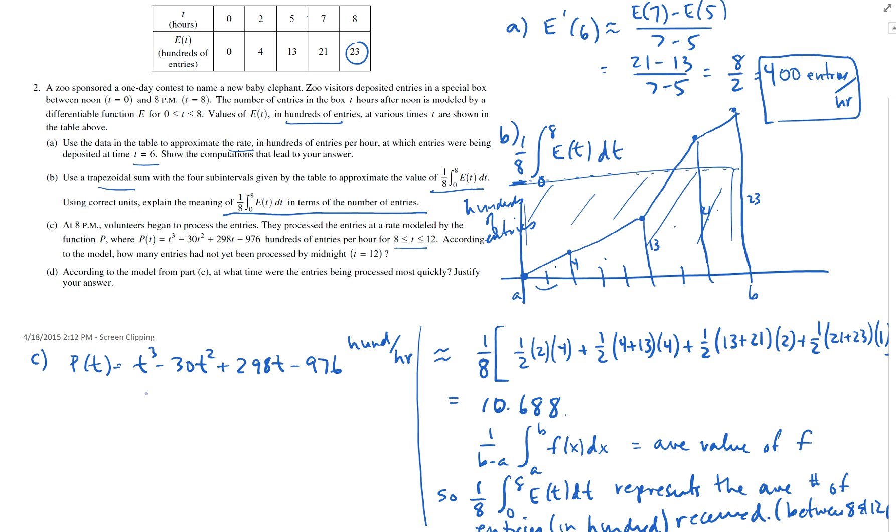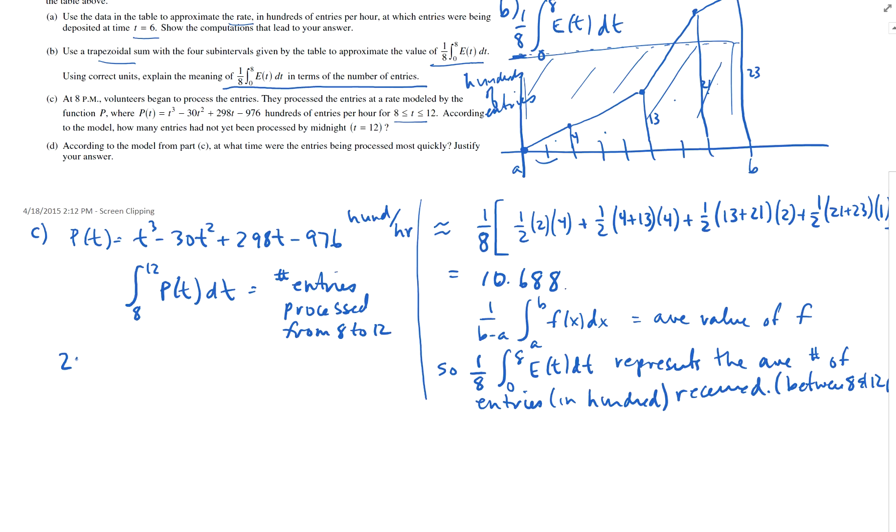How do I know how many, how do I calculate how many were processed? Well, if this is hundreds per hour, then doesn't this right here, from eight to 12, p of t dt, doesn't that represent the number of entries processed from eight to 12? So, wouldn't this 23 minus the integral from eight to 12, wouldn't that represent equals the number of entries not yet processed? That is exactly right.